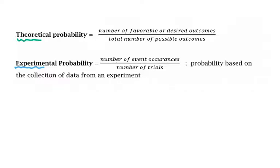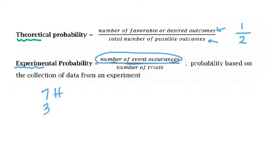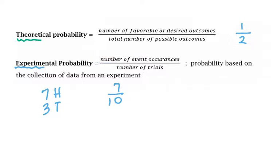For theoretical probability, you take the number of desired outcomes over the total possible outcomes. So if you're going to toss a coin, there is one outcome you want — either heads or tails — but there are two outcomes it could be. For experimental probability, you look at the number of event occurrences. So if you toss a coin five times and get seven heads and three tails, the experimental probability of getting heads next time is seven out of ten, instead of the theoretical probability of one half. Experimental probability changes depending on your experiment outcomes. We'll mostly do theoretical probability, but there will be a few questions about experimental probability.